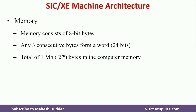Coming back to memory: the memory of SIC-XE is 2 raised to 20 bytes in size, that is nothing but 1 MB. If you go with SIC, the size is 2 raised to 15 bytes. Each 3 consecutive bytes represent one word, and 1 byte is nothing but 8 bits. These two aspects are the same between SIC and SIC-XE, but the size of memory is more in SIC-XE.